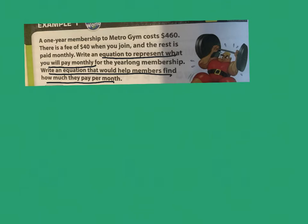We know that a one-year membership, also known as 12 months. Let's just kind of put that in there because they do talk about monthly things. So let's just circle that. At the gym costs $460 total. Now you do have to pay $40 when you join, but after that you pay monthly.